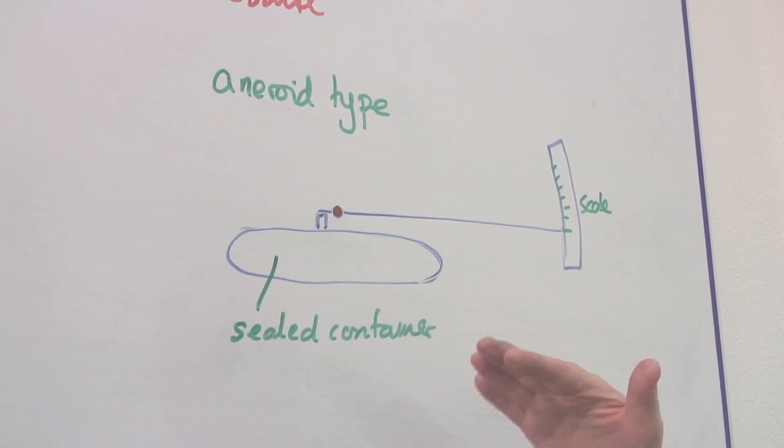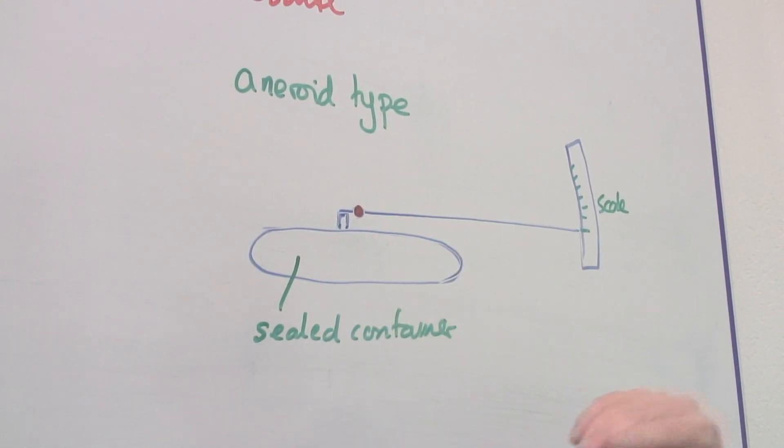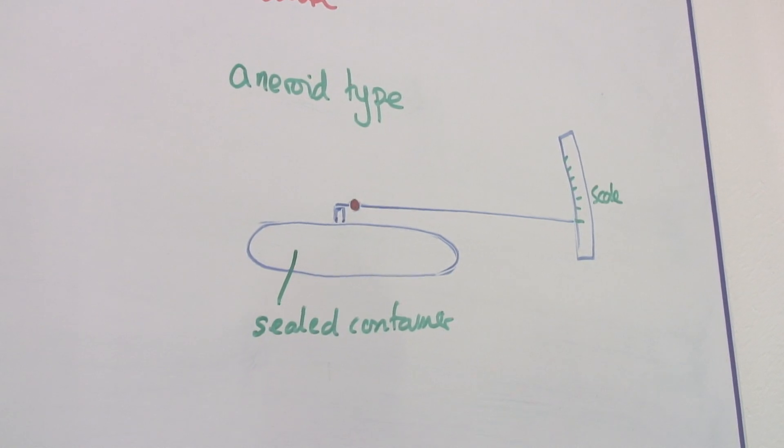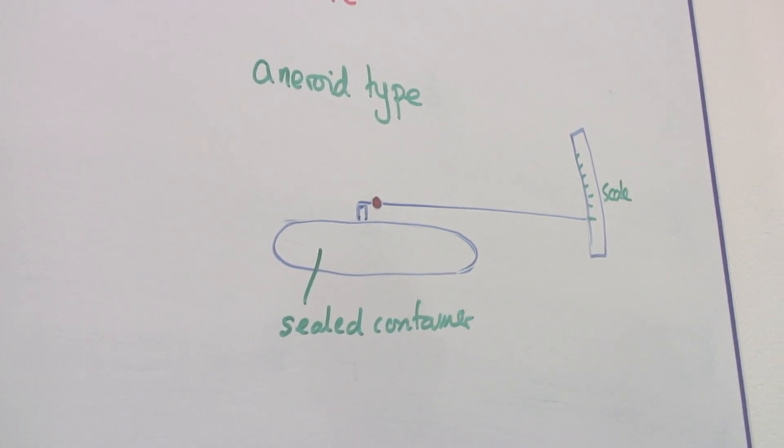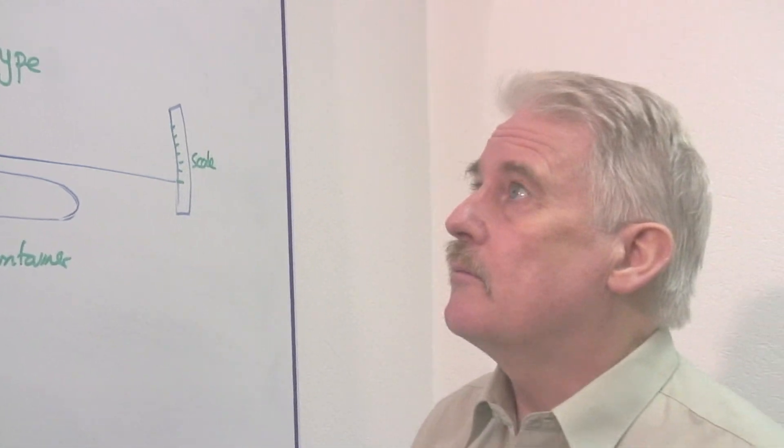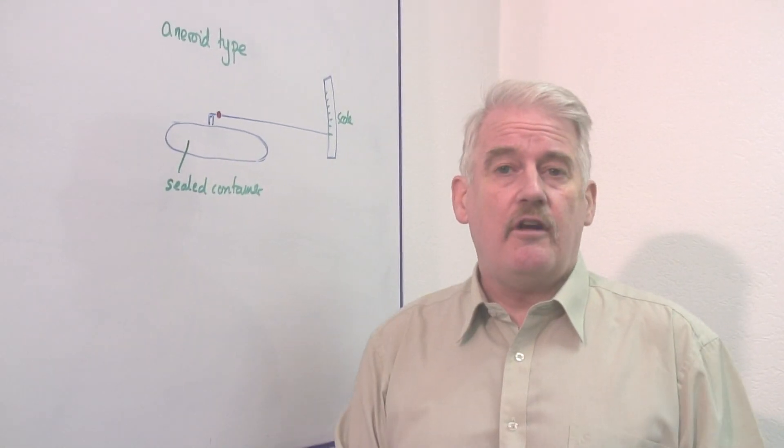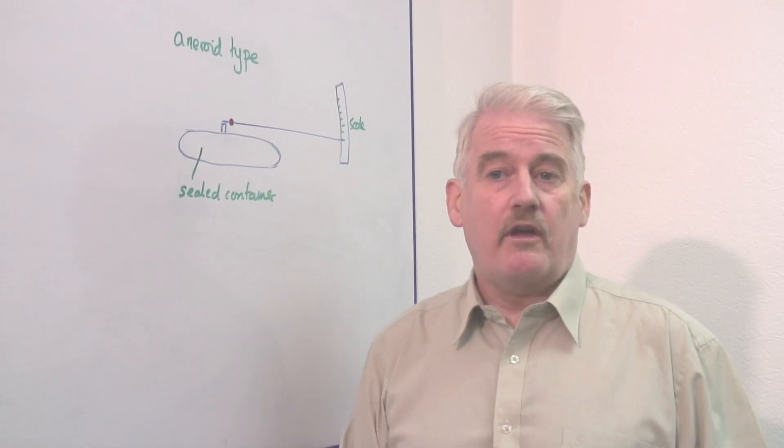You can find normal atmospheric pressure by looking at the weather forecast and marking your zero. This is a simple aneroid type barometer, one that you can make at home. That is basically the kinds of barometers that there are and how to make one at home.